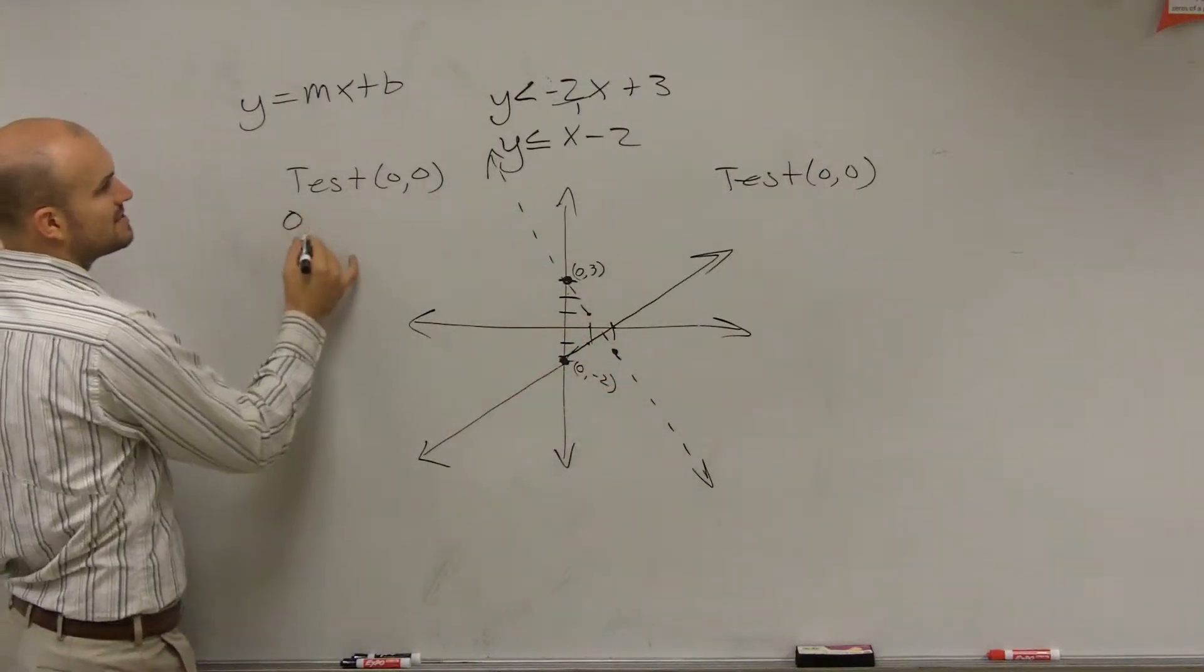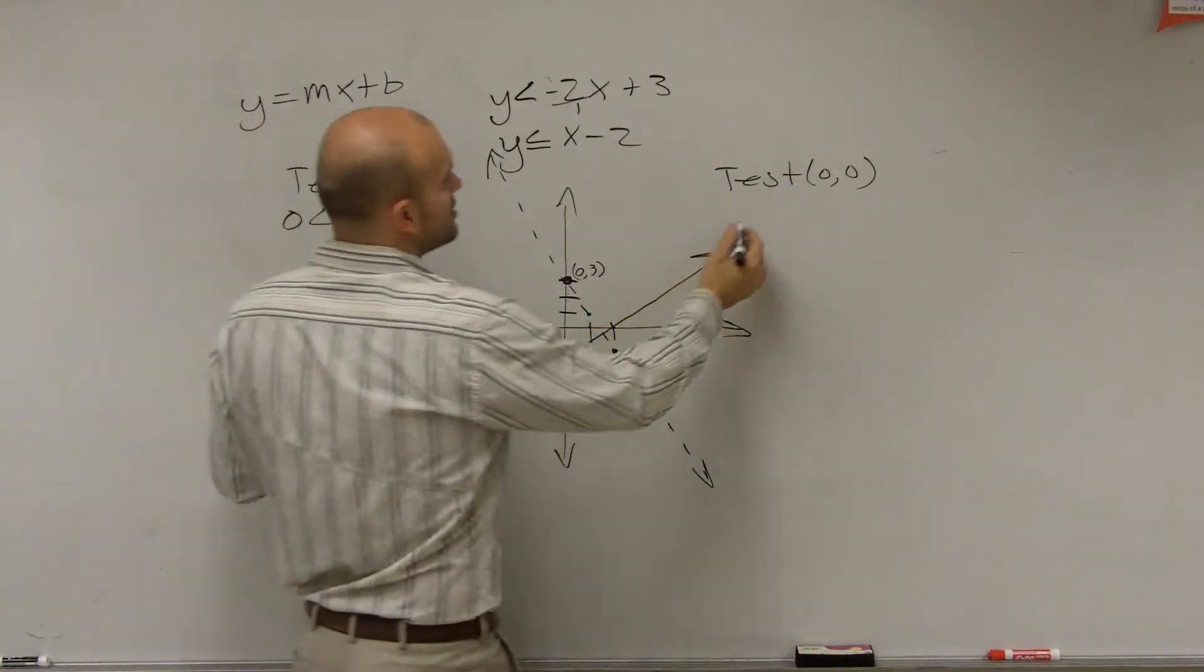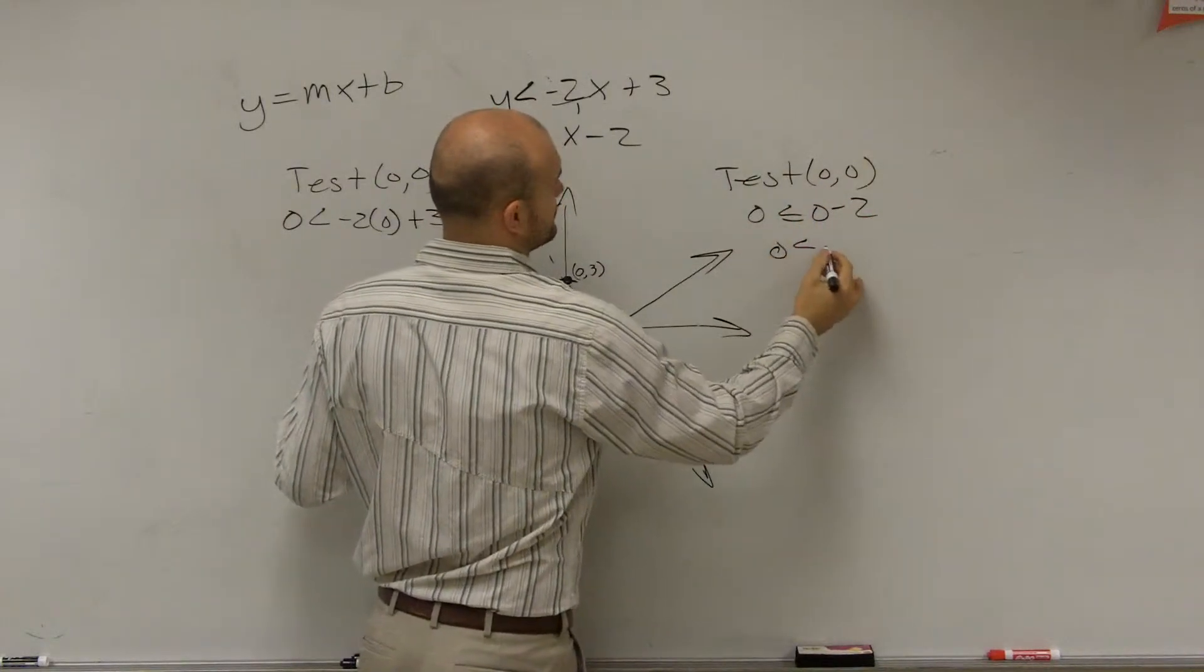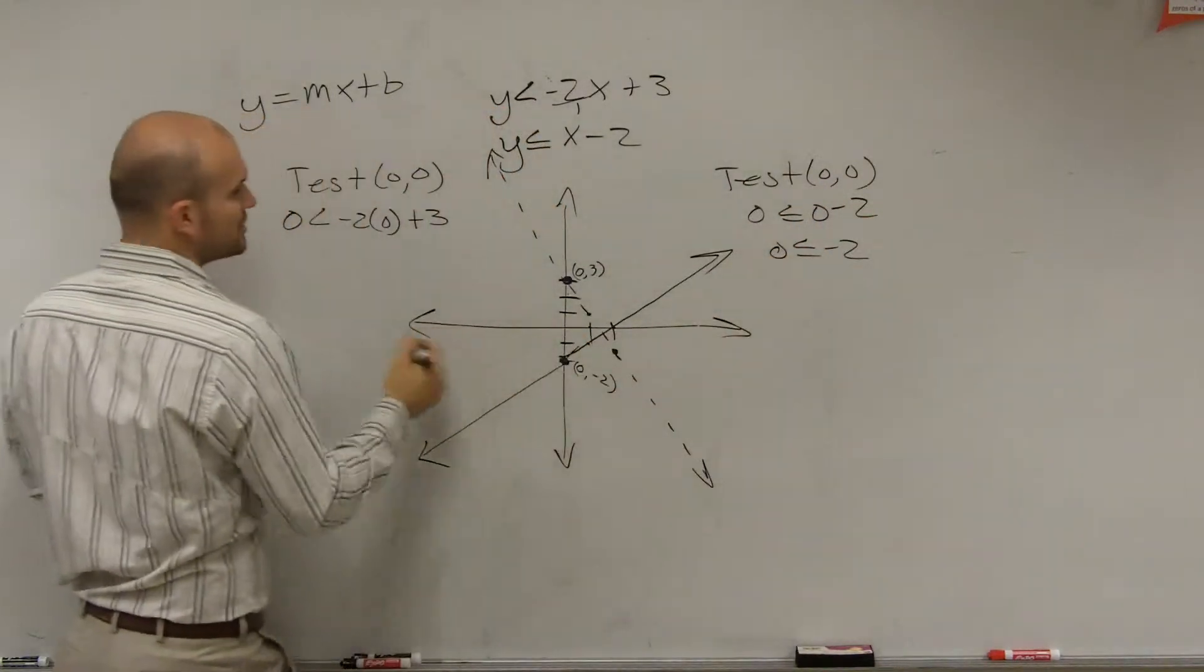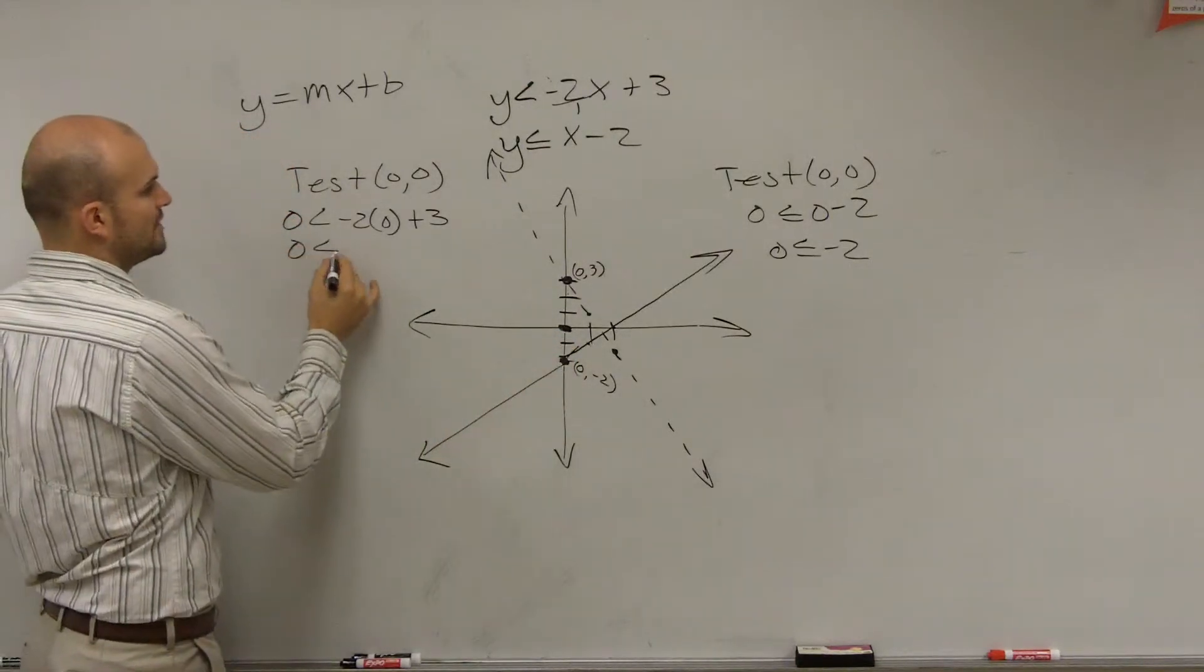So what I'm going to do is I'm going to test 0, 0 for both equations. And what you do is you just plug in 0 in for x, and you plug 0 in for y. And you just test it. And you determine, is my point 0, 0 true or false for each problem?